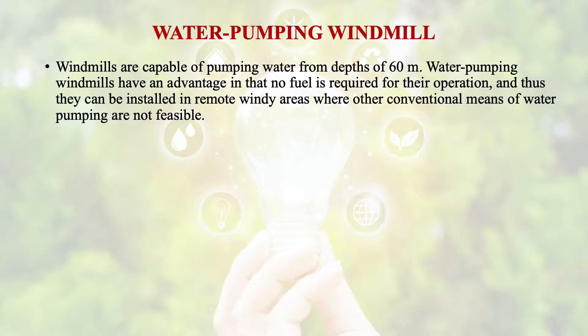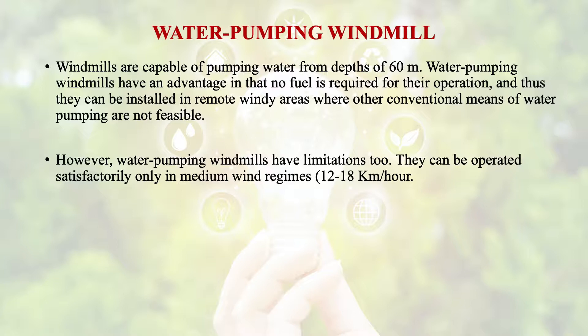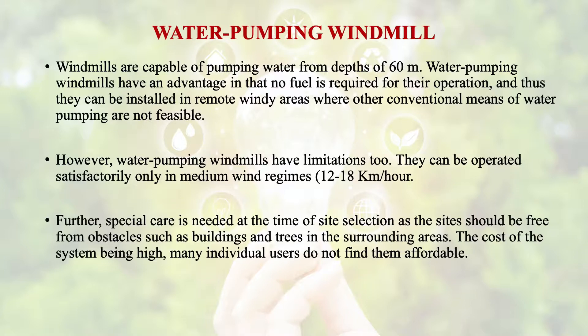Water pumping windmills have the advantage that no fuel is required for their operation, and thus they can be installed in remote windy areas where other conventional means of water pumping are not feasible. However, they have limitations too. They can be operated satisfactorily only in medium wind regimes of 12 to 18 km per hour. Special care is needed at the time of site selection as the site should be free from obstacles such as buildings and trees. The high cost of the system means many individual users do not find them affordable.